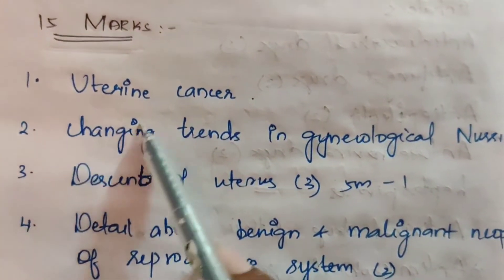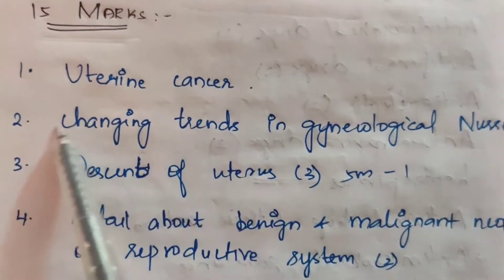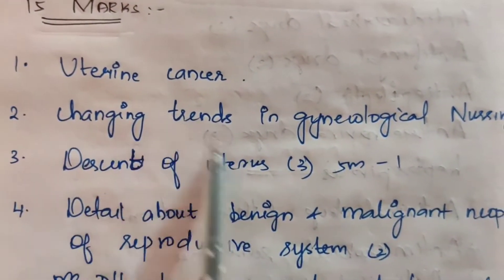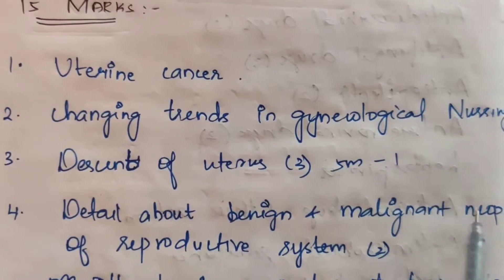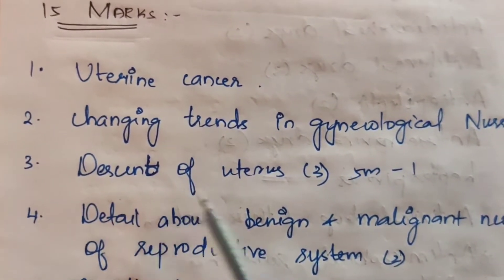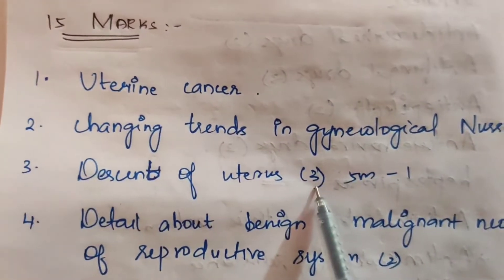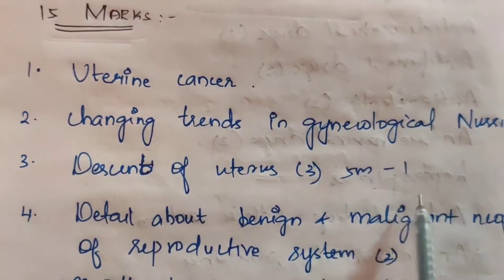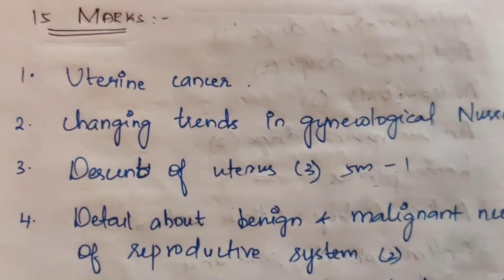First one: uterine cancer. Second one: changing trends in gynecological nursing. Third one: descent of uterus. These topics appeared three times for 15 marks and once for 5 marks.